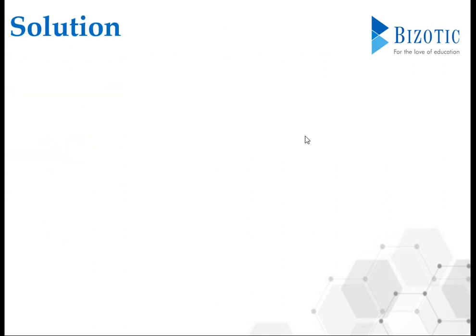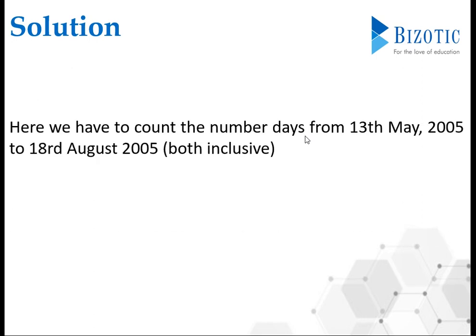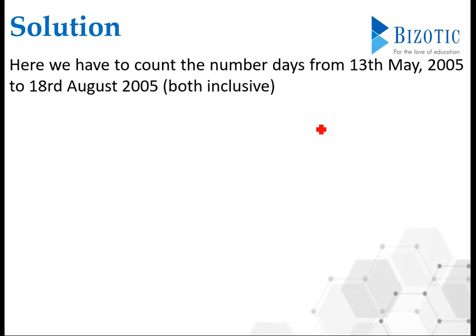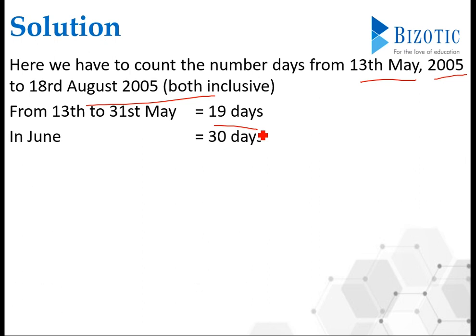Let's begin with the solution. Here we have to count the number of days from 13th May 2005 to 18th August 2005, both days inclusive. From May 13th to 31st May, that's 19 days.